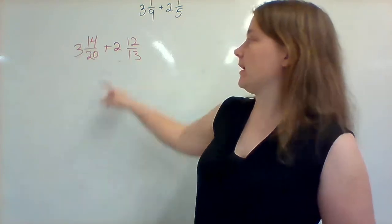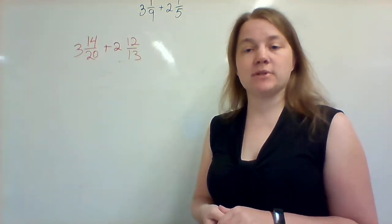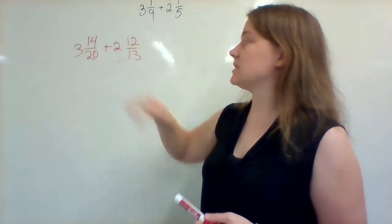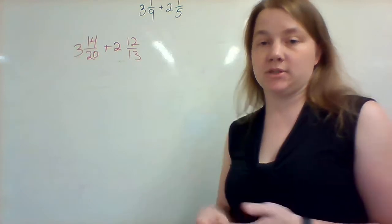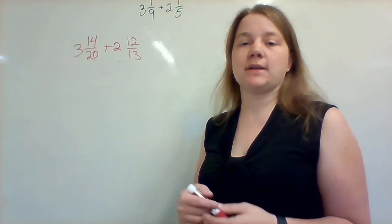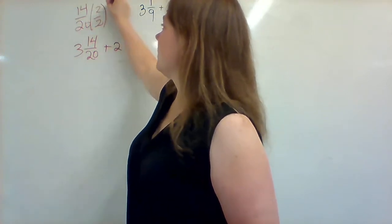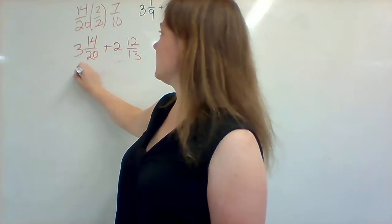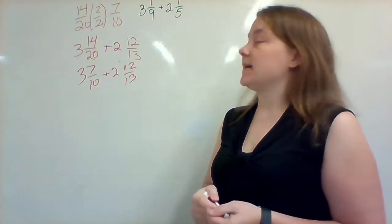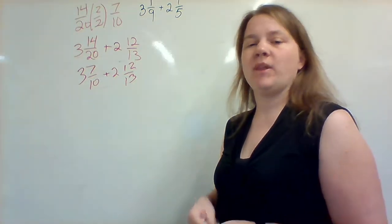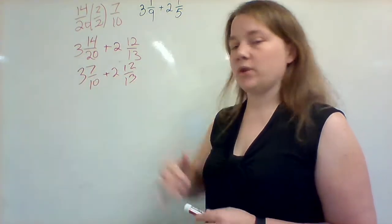I don't have to simplify 14 over 20, I can leave it the way it is. But if I simplify this, that means I'm going to be looking at smaller numbers and things are going to be less complex. So I'm going to choose to simplify. If you forget to simplify, you're going to get the right answer eventually, you're just going to have bigger numbers that you're multiplying with. So I'm going to take 14 over 20, simplify that, end up with 7 over 10. So I'm going to rewrite this as 3 and 7 over 10 plus 2 and 12 over 13. I'm going to do my exact same octagon again. Even though there's whole numbers in here, I'm going to ignore them for the beginning of the problem until I get both of these fractions to have the same denominator.